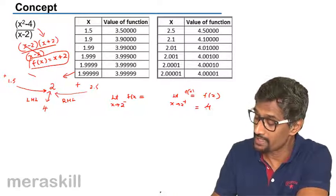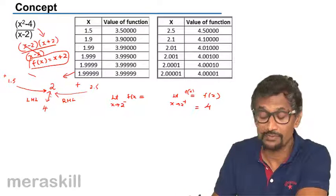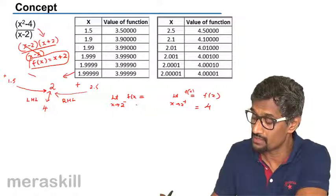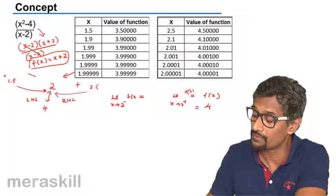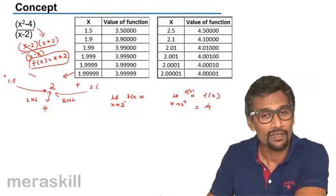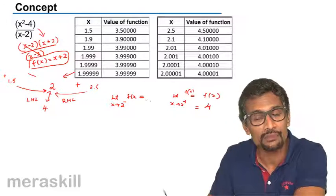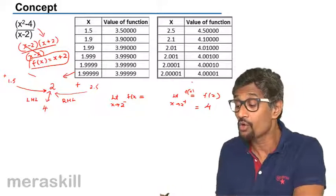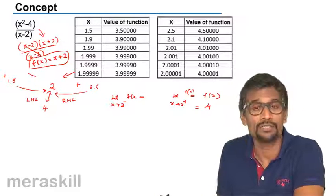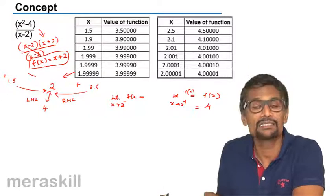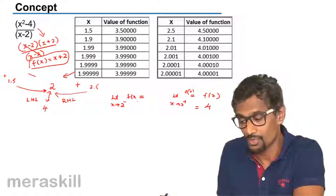In both the cases it turns out to be four. You look at it from this logic or you look at it from this logic, both ways the value of the function is getting close to four. And hence the limit of the function is four. So we say that such a function's limit exists when X is equal to two.